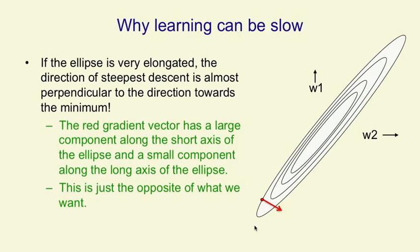So the gradient will quickly take us across the bottom of that ravine corresponding to the narrow axis of the ellipse, and it will take a long time to take us along the ravine corresponding to the long axis of the ellipse. It's just the opposite of what we want.